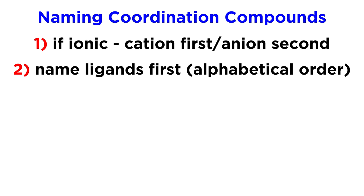Second, we will always name the ligands first, and we will do so in alphabetical order. Once these have all been named, then we will name the central metal atom.